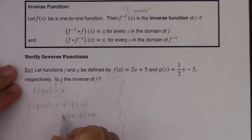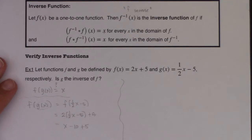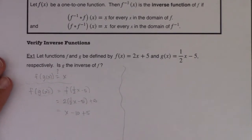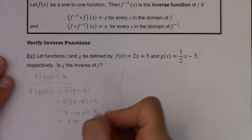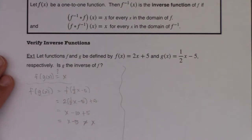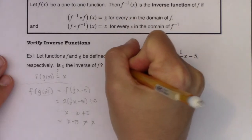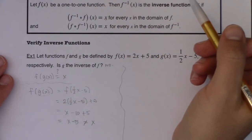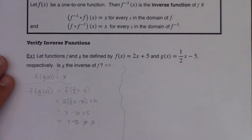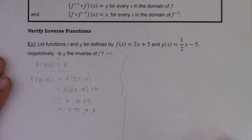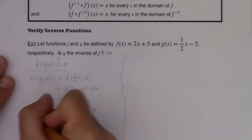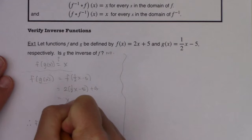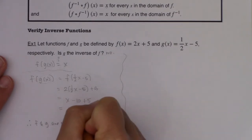That's a bad sign. I already know the answer is no, because I didn't meet the first condition — f of g of x is not equal to x. From here, I could stop and say: f and g are not inverse functions of one another.